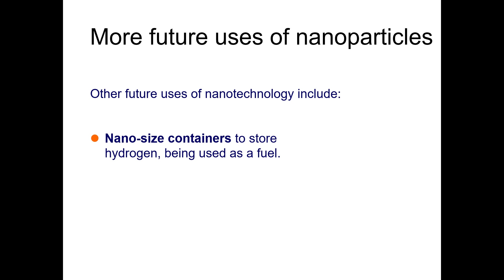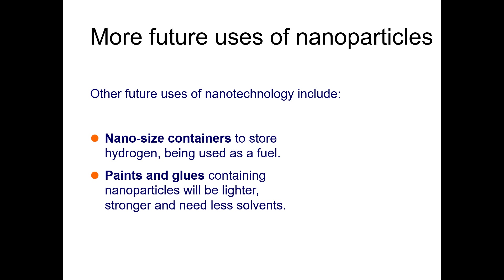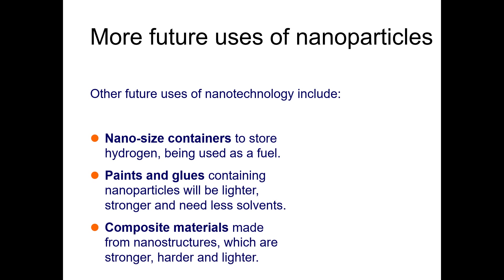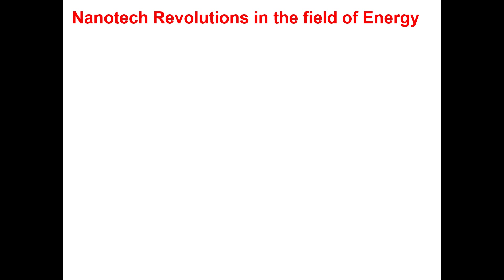We normally utilize hydrogen as a fuel, and for that we can design nanoscale containers to store hydrogen. Similarly, we can have paints and glues containing nanoparticles which will be lighter, stronger, and need less solvent. In addition, we can have composite materials made from nanostructures which are stronger, harder, and lighter compared to already available bulk materials.